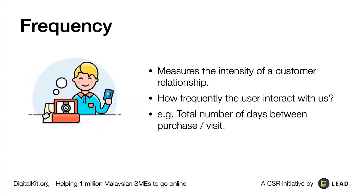The second one is frequency. Frequency measures the intensity of a customer relationship — how frequently the user interacts with us, how often they come to your shop. You can use this not just in sales activity but also in list generation. For example, a mobility digital app for commuters — that's how frequent your users use your application. Ruben has content websites with Google Analytics, which tells you how often people come to your website.